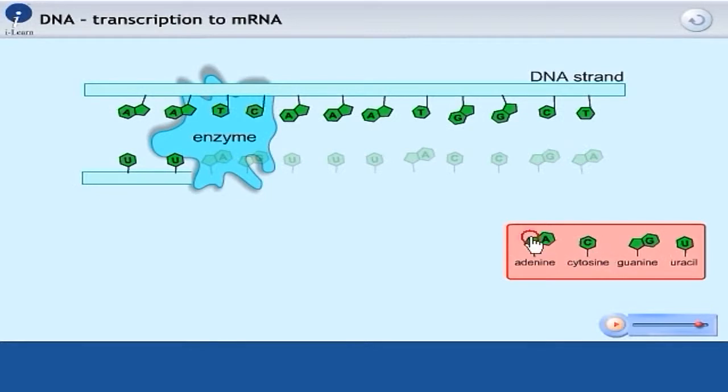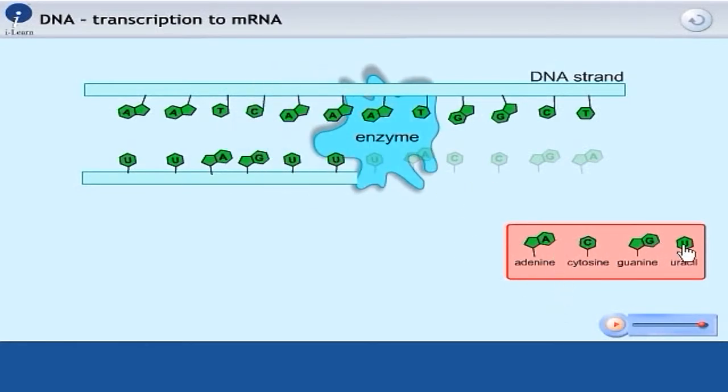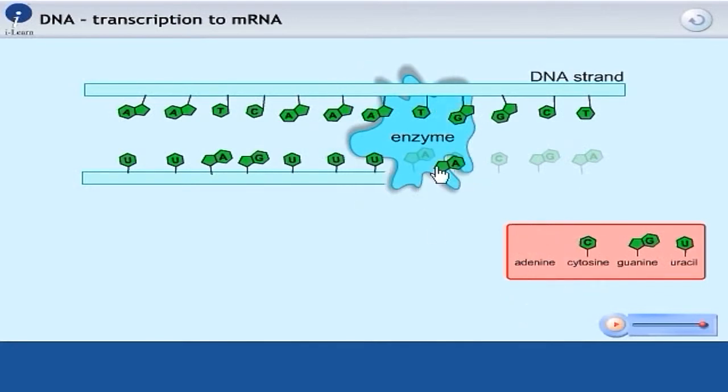another enzyme comes along and starts to build a new strand of material called messenger RNA. And this messenger RNA is going to go out into the cytoplasm in a second, meet the ribosomes where it's going to be a template to make some protein.